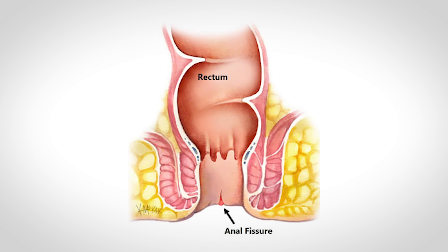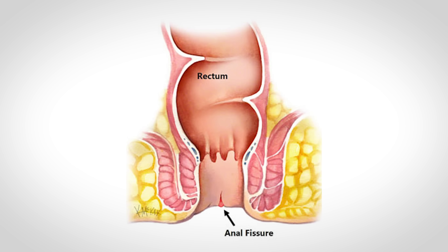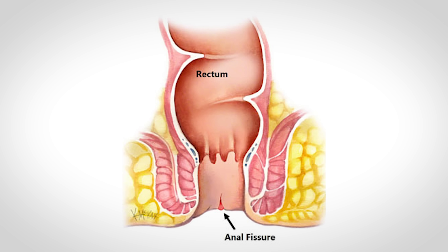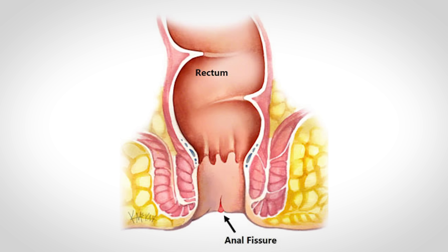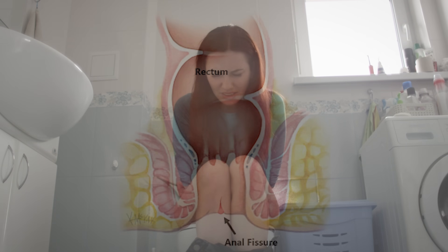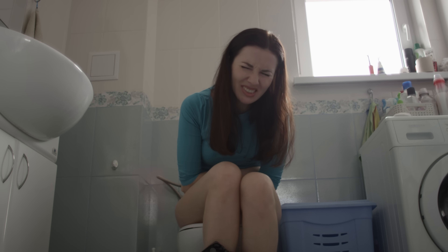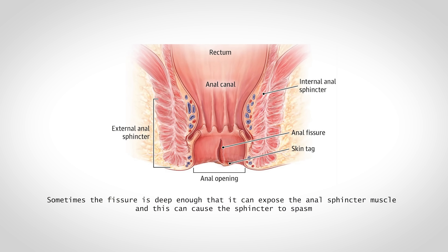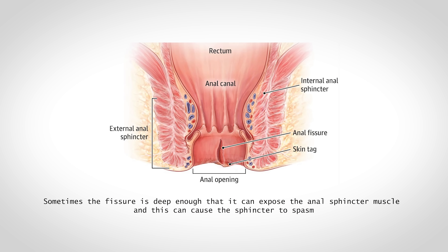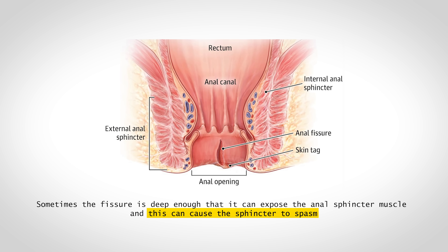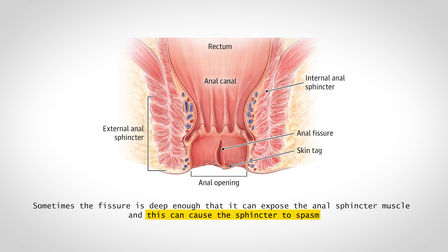Another common cause of rectal bleeding is anal fissures — small tears in the lining of the anus, often caused by passing a hard large stool, vaginal delivery, or anal intercourse. The pain from a fissure can be quite intense, particularly during and after a bowel movement. Sometimes the fissure is deep enough to expose the anal sphincter muscle, causing the sphincter to spasm, which not only contributes to severe pain but can also restrict blood flow to the fissure, slowing the healing process.